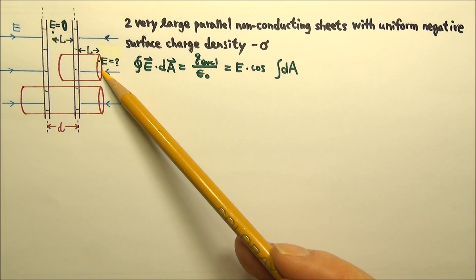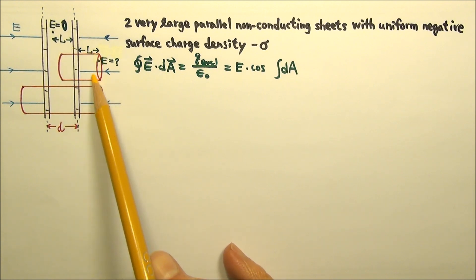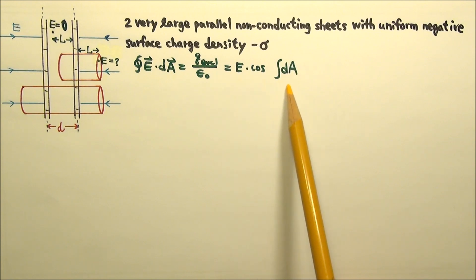Although the magnitude of the electric field is not the same everywhere on this Gaussian surface, it is okay. Because we only need to consider the part of the Gaussian surface that has non-zero flux.